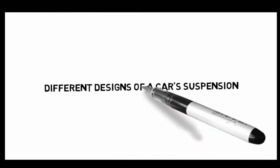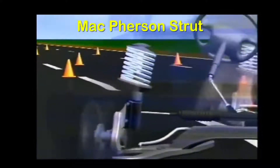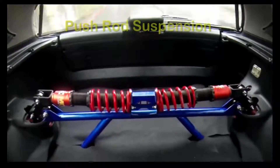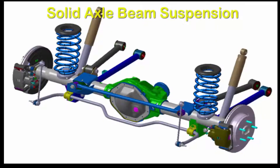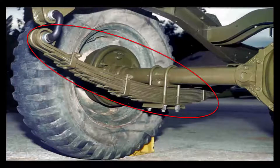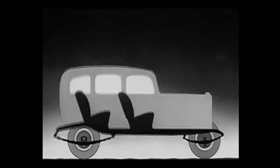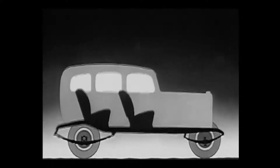Suspensions are widely classified depending upon their designs. They range from MacPherson strut, push rod suspension, and solid axle beam suspension. You might have wondered about leaf spring suspension — they are long flexible bars installed on wheels to absorb the shocks.